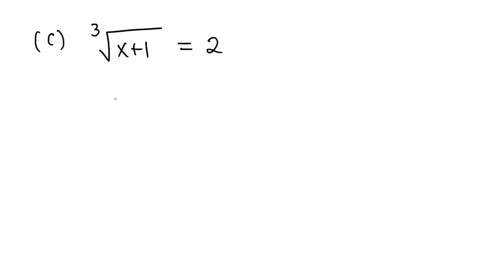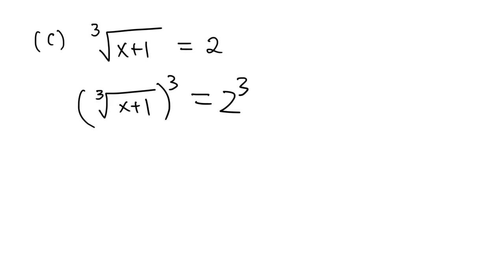Here is another example. This time we have a cube root. For square root we took the square of both sides; for cube root, we are going to take the cube of both sides of the equation. This will cancel the radical sign and leave x plus 1 inside. On the right-hand side we have 2 cubed which is 8. If you subtract 1 from both sides, we get the solution x equals 7.